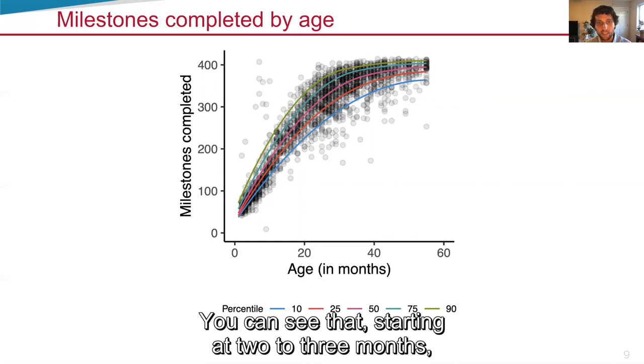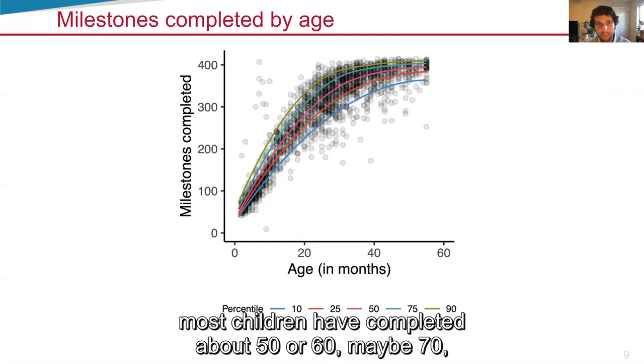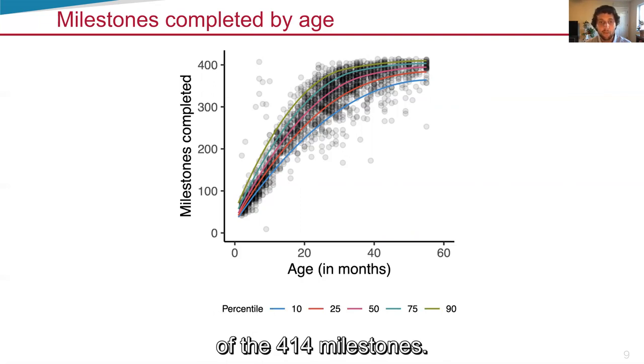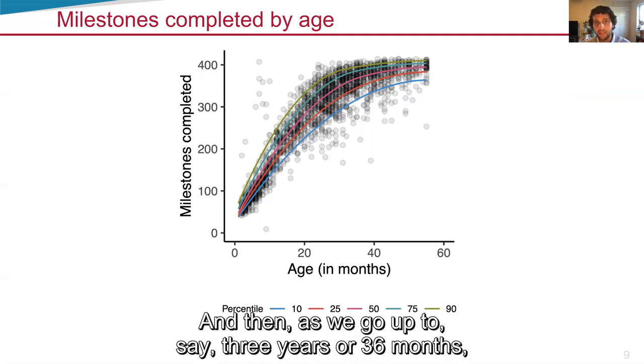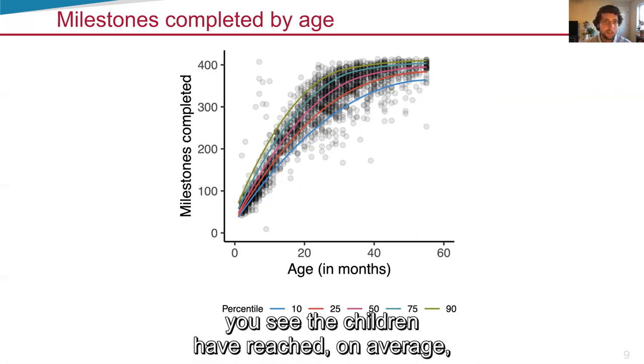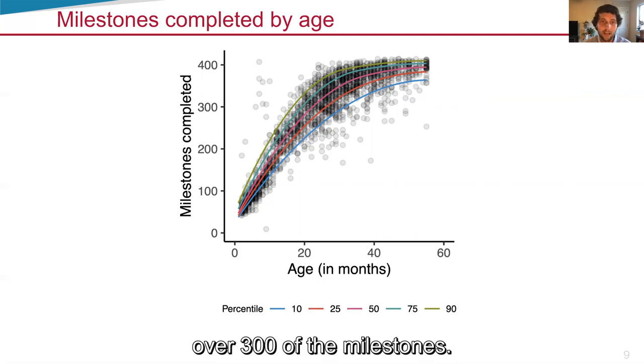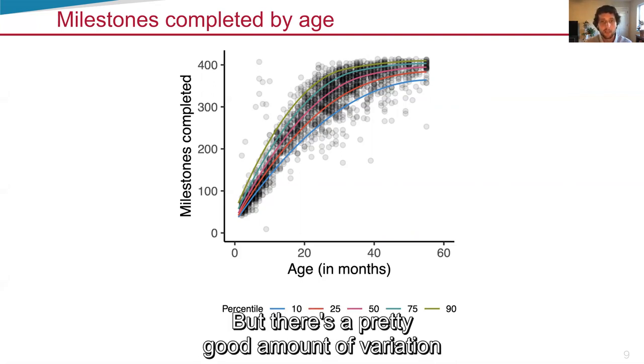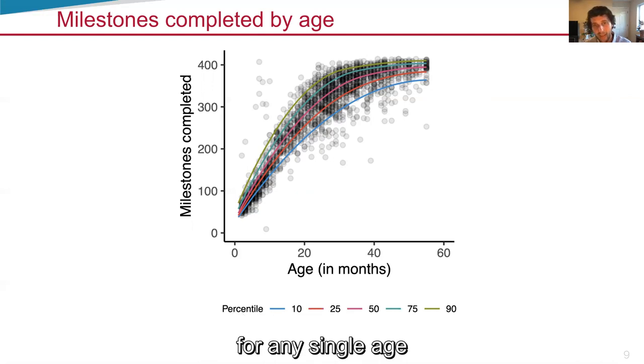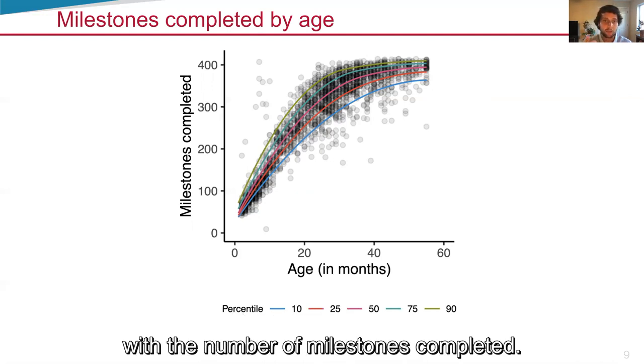You can see that starting at two to three months, most children have completed about 50 to 60, maybe 70 of the 414 milestones. And then as we go up to say three years or 36 months, you see that children have reached on average over 300 of the milestones. But there's a pretty good amount of variation for any single age with the number of milestones completed.